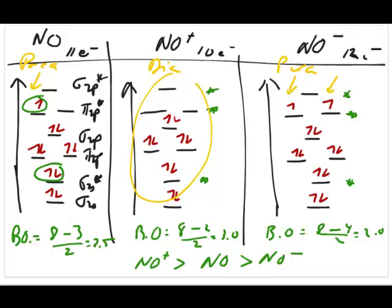That covers the examples of how to use molecular orbital energy diagrams to predict bond strength and relative bond strength. Bond length is inversely proportional to bond strength, so you can use the same approach to compare relative bond lengths. Lastly, magnetic behavior — whether a species is paramagnetic or diamagnetic — can also be determined from the electron configuration.